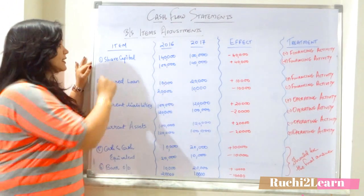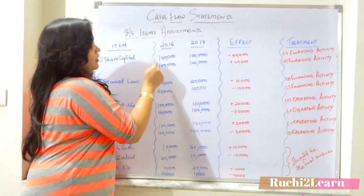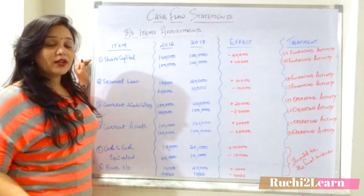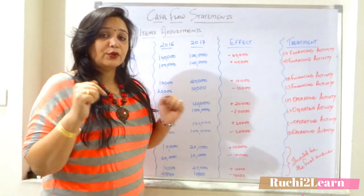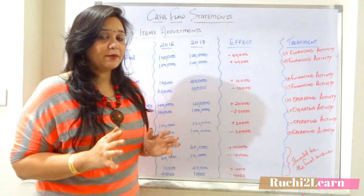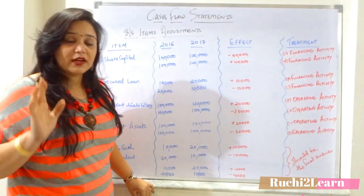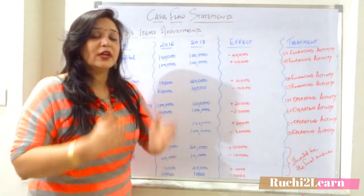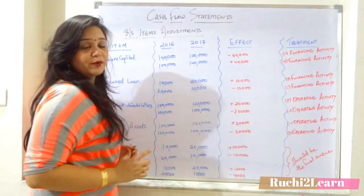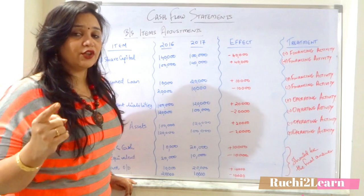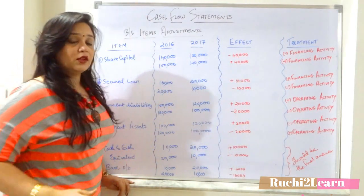The first item in the balance sheet is share capital. For example, in 2016 and 2017 the share capital was 1,40,000 and 1,00,000. That means there is a decrease in share capital of rupees 40,000. This is your step one — take the balance sheet, compare the two years, and find out the effect. This is your working note and not your final answer, so you can do it in your mind or near the question.